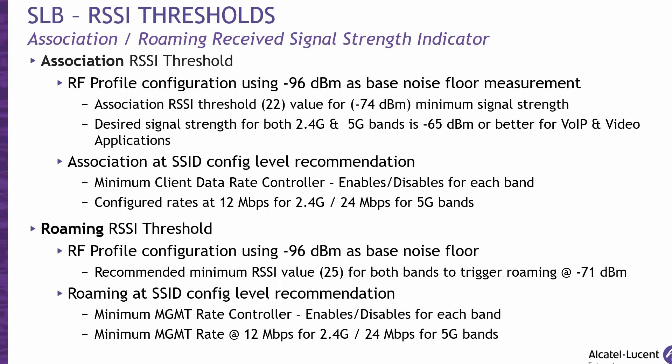These roaming decisions can be best enabled for coverage-based network designs since there will be fewer access points deployed with weaker signals at the coverage edges. However, for ALE's best design practices, we recommend the capacity-based design with a higher access point density to eliminate most weak signals between access points. For this scenario, minimal fine-tuning of these thresholds is required. However, for those legacy devices that still need system control, the roaming RSSI threshold is to be set at 25 for both bands. Using the RSSI to dBm conversion, the roaming trigger will be at minus 71 dBm for clients to roam to another access point that provides a stronger signal.